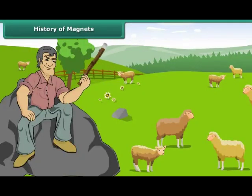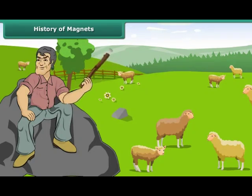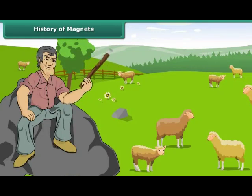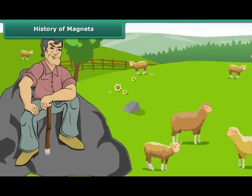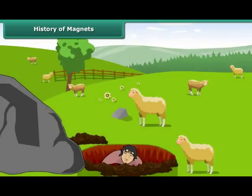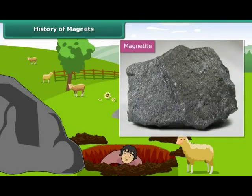There is a popular legend that leads us to the discovery of magnets, which involves an elderly Greek shepherd named Magnus. It says that Magnus was herding his sheep in an area of northern Greece called Magnesia about 4000 years ago. Suddenly, the metal tip of his stick became firmly stuck to a large black rock on which he was sitting. To find the source of attraction, he dug up the earth to find magnetite, a natural magnetic material. This type of rock was subsequently named Magnetite, which was named after Magnus himself.